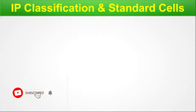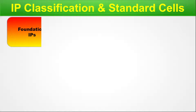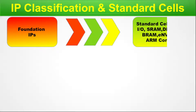Moving to IP classification and the position of standard cells. The classification starts with Foundation IPs, where we can expect standard cell library, IO, SRAM, DRAM, BRAM, ENVM, ARM core, etc.